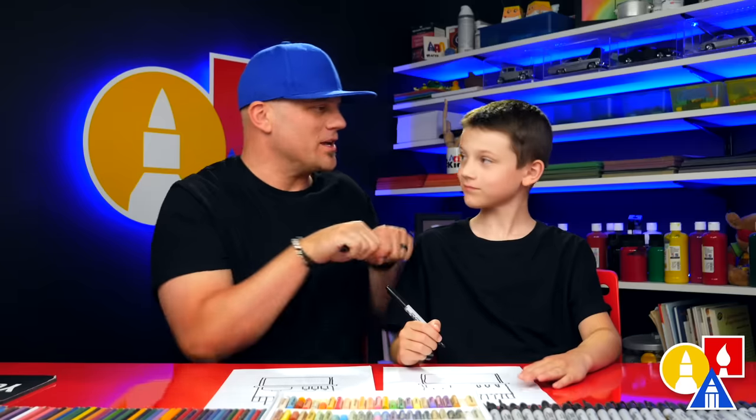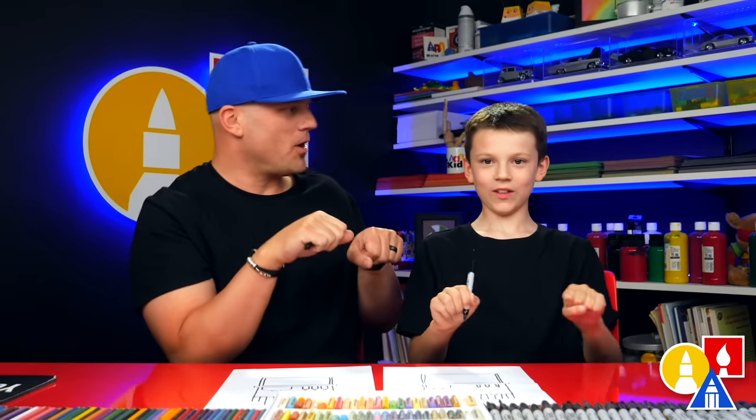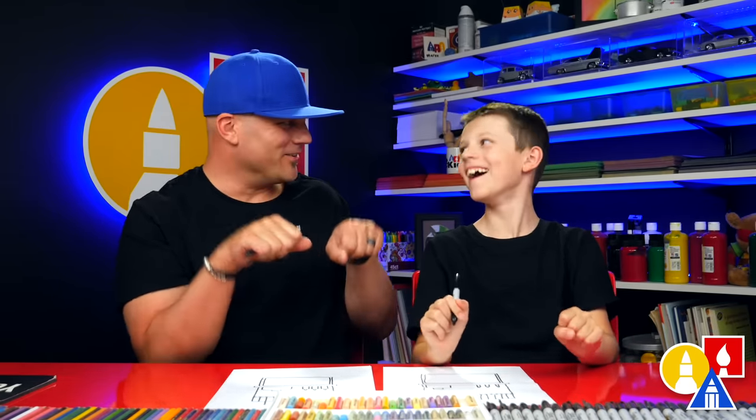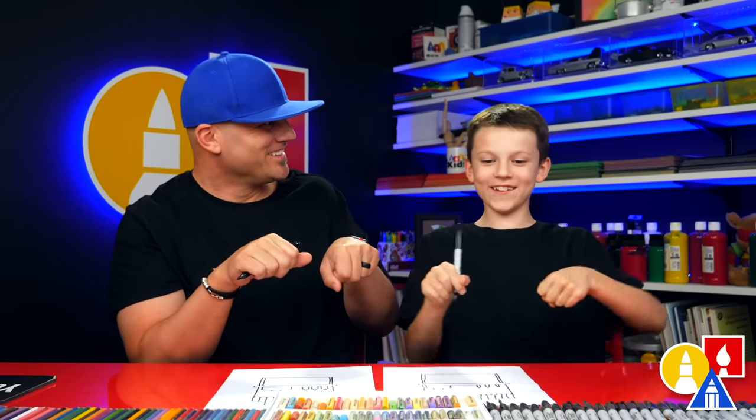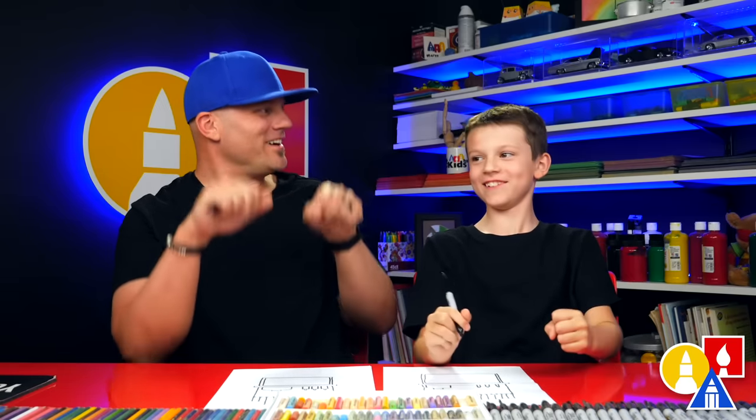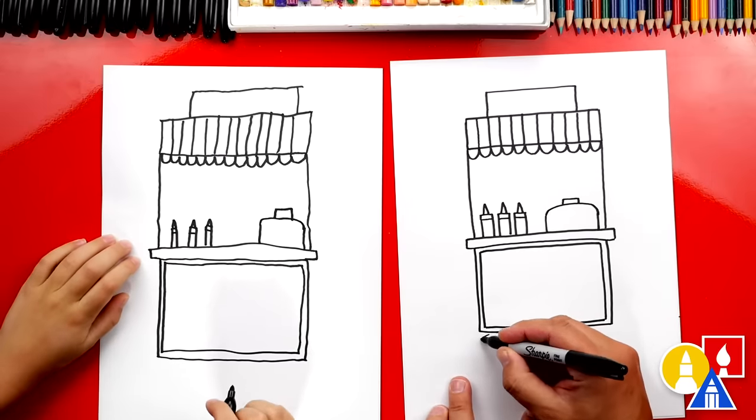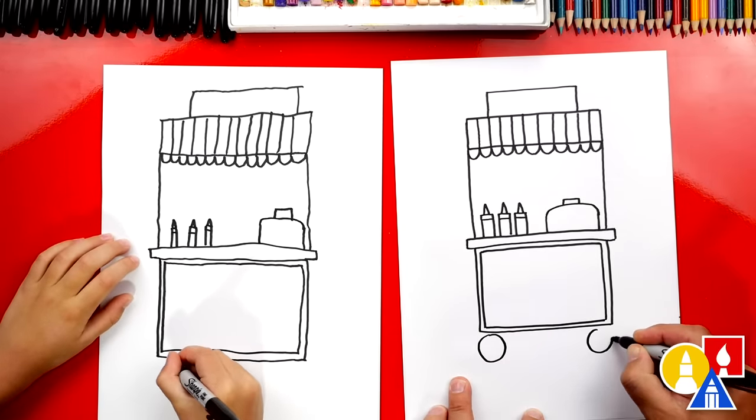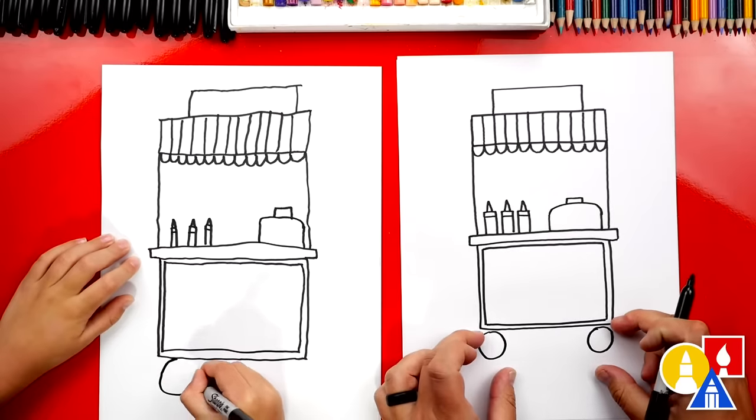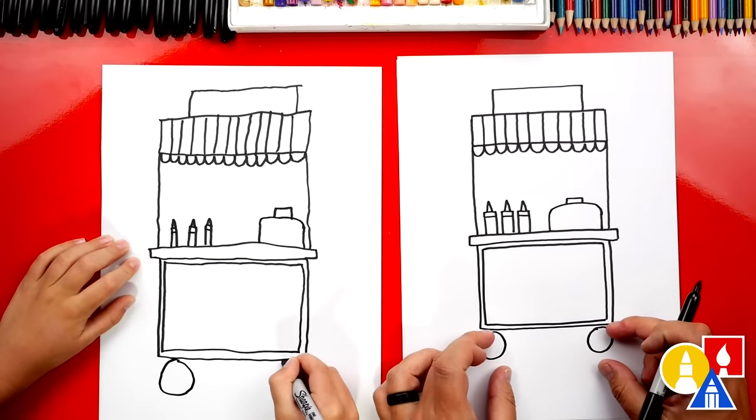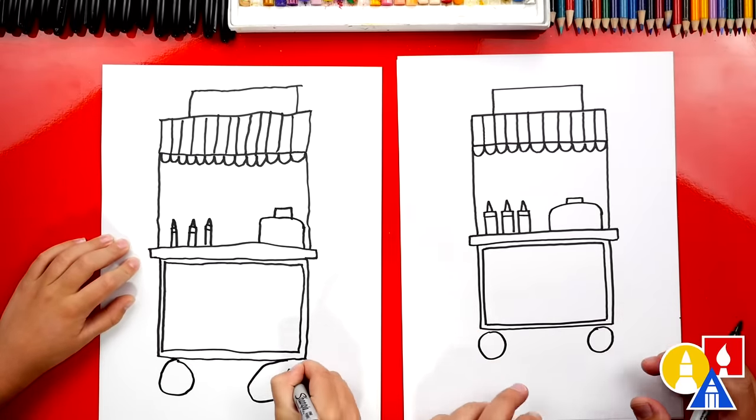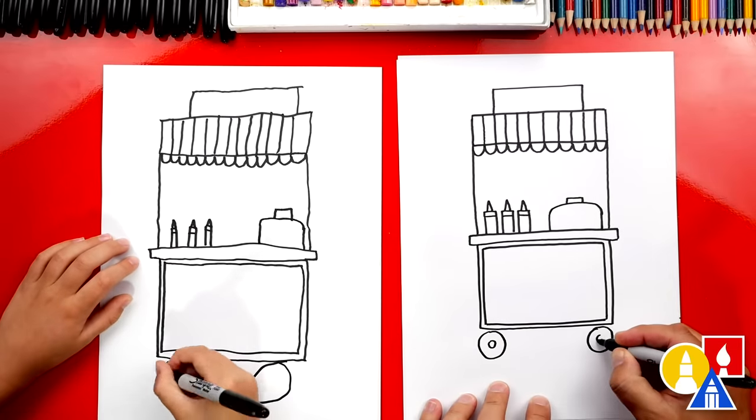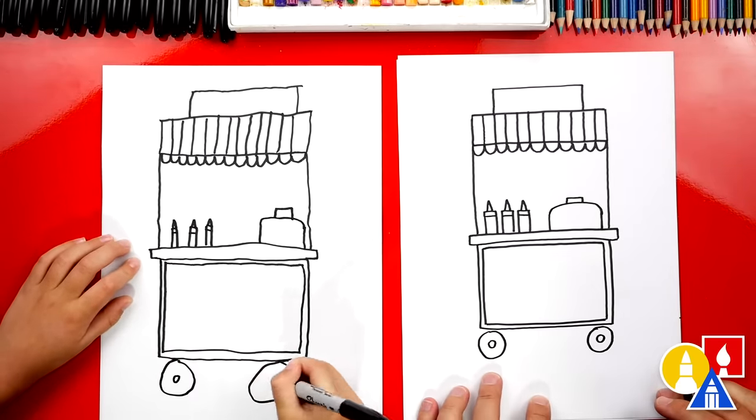Now we need to add the wheels so that we can push the hot dog cart around the park. Let's draw one wheel on the left and we'll draw another wheel over here on the right. We want those circles to be the same. We drew circles. We have so many rectangles. We finally drew a circle. Then let's draw a smaller circle inside. Drew another circle.